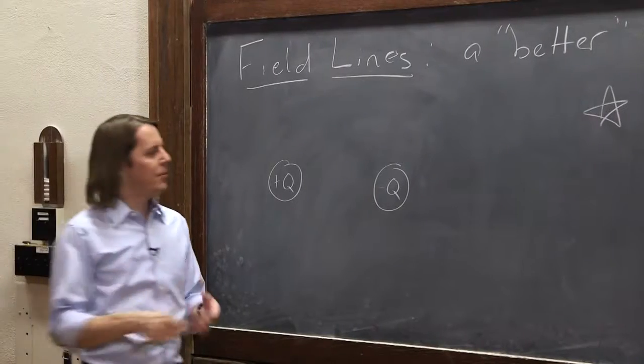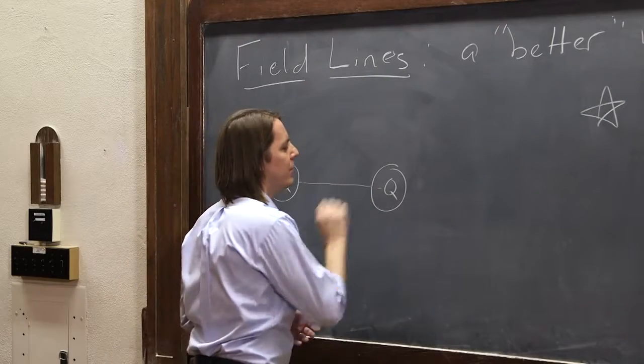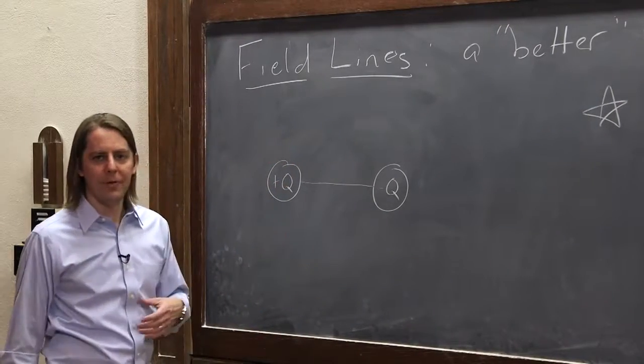We'll just do a positive charge here and a negative charge here. So just like with vectors, I'm going to think about what would a positive test charge do if it were sitting right here? Well, it would fly straight over there. So instead of drawing a few vectors, I just draw a line.